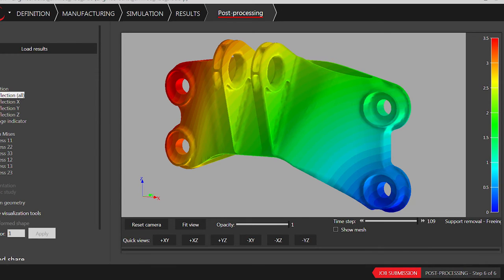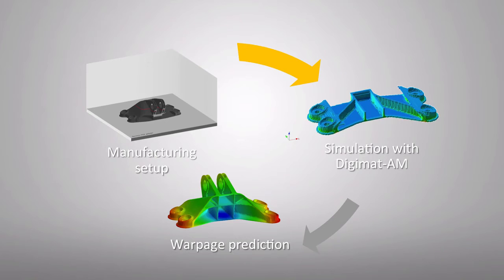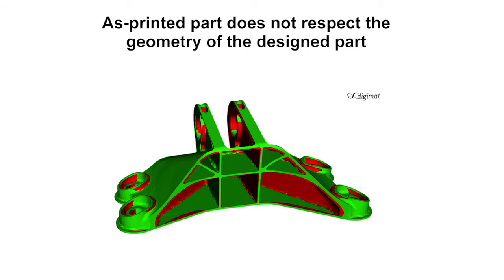When we complete the process simulation workflow, Digimat AM predicts the warpage of the as-designed geometry. Superimposing the as-designed geometry in green and the as-printed one in red highlights the deviation due to warpage. To improve the dimensional accuracy of the part, a solution consists of adjusting the geometry to be printed by accounting for the results of the first virtual printing simulation.